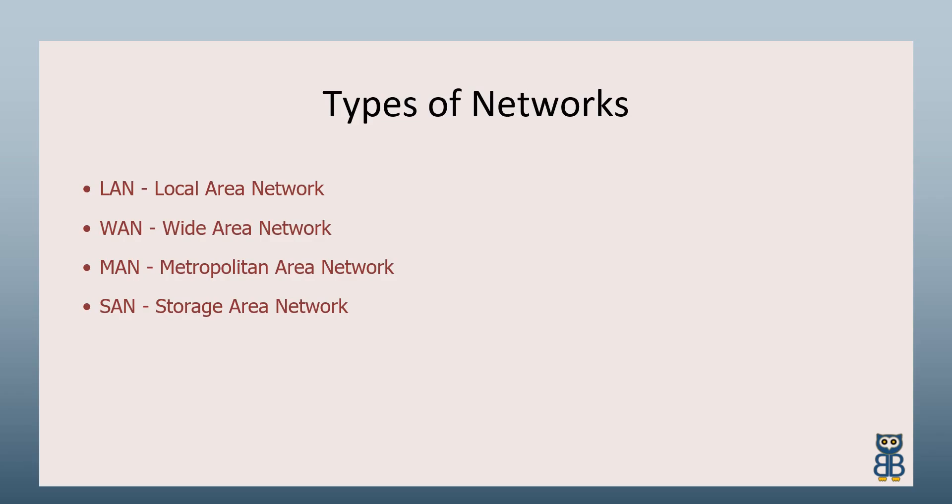A network is simply defined as something that connects things together for a specific purpose. The term is used in a variety of contexts, including telephone, television, computer, or even people networks. A computer network connects two or more devices to share a nearly limitless range of information and services, including documents, email, messaging, websites, databases, music, printers, faxes, and telephony and videoconferencing.